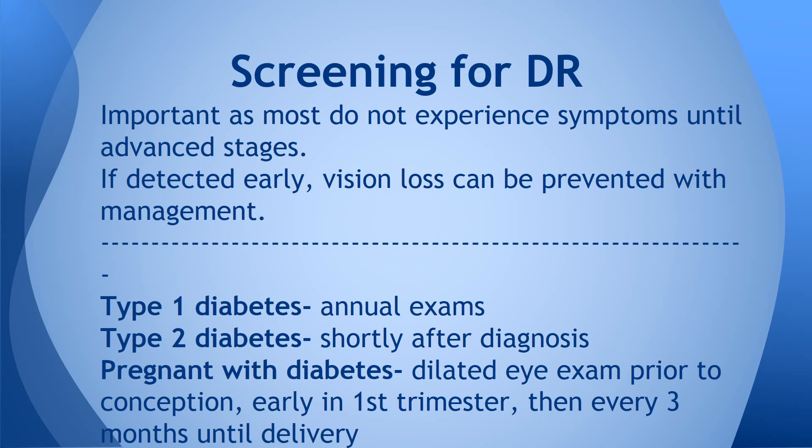Screening for DR — so we suspect somebody may have DR. What are some things to look for? It's important to note that not everyone experiences symptoms until the advanced stages, which reinforces the notion that you should have your eyes screened at least once a year if you're at risk, or more often. If it is detected early, vision loss can be prevented with proper management.